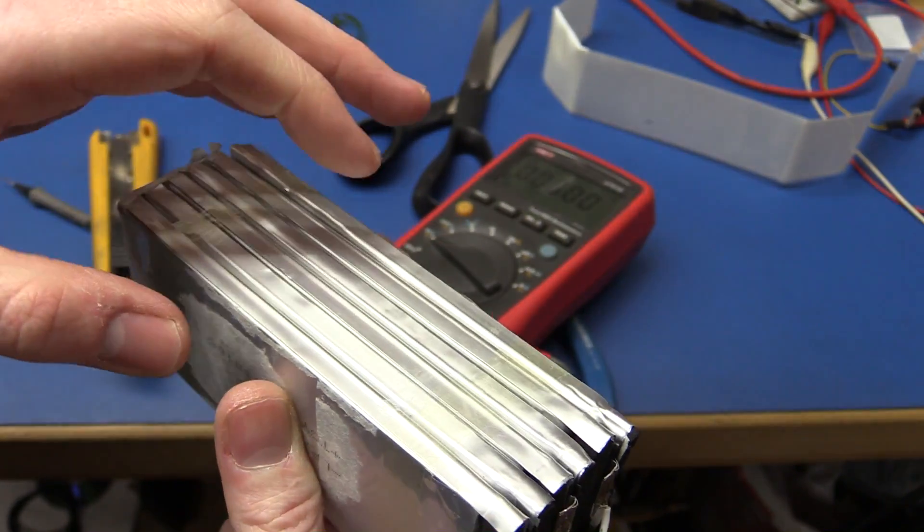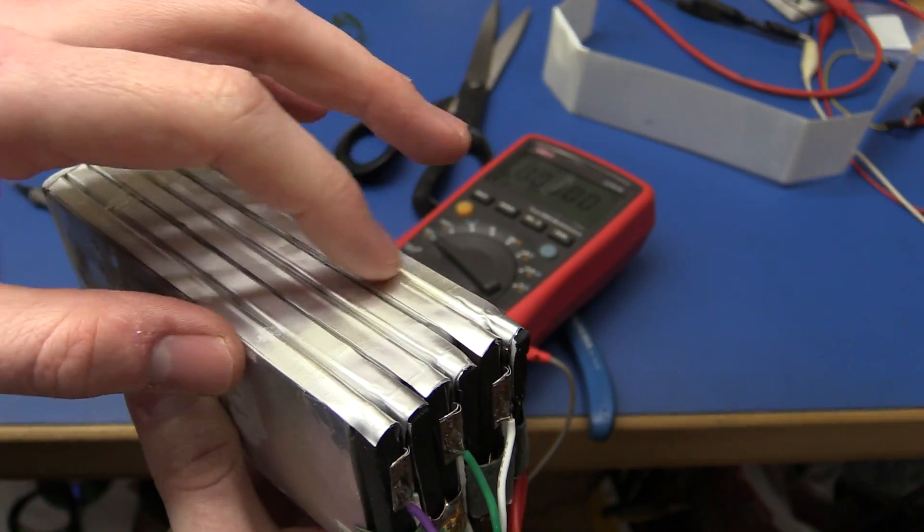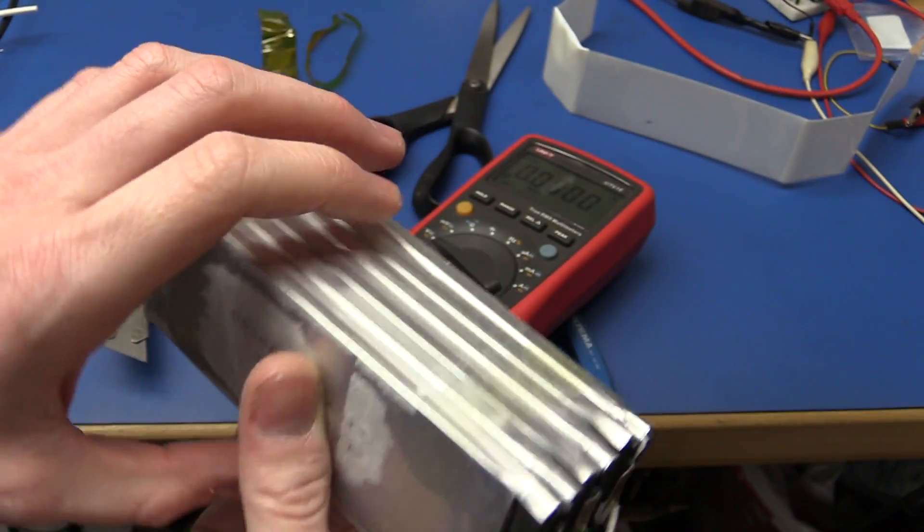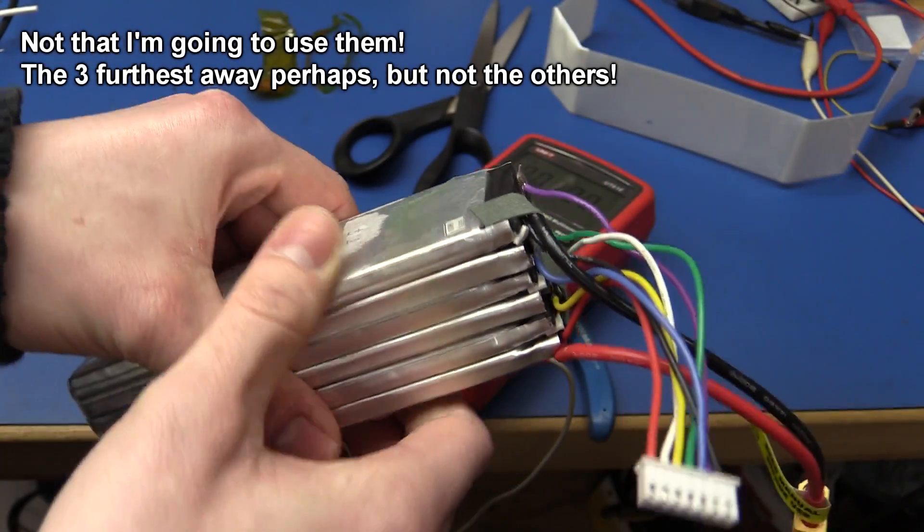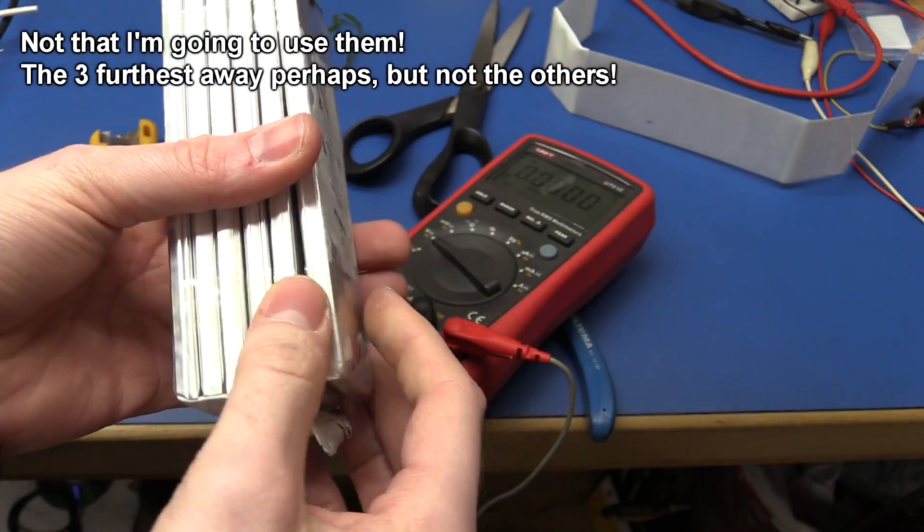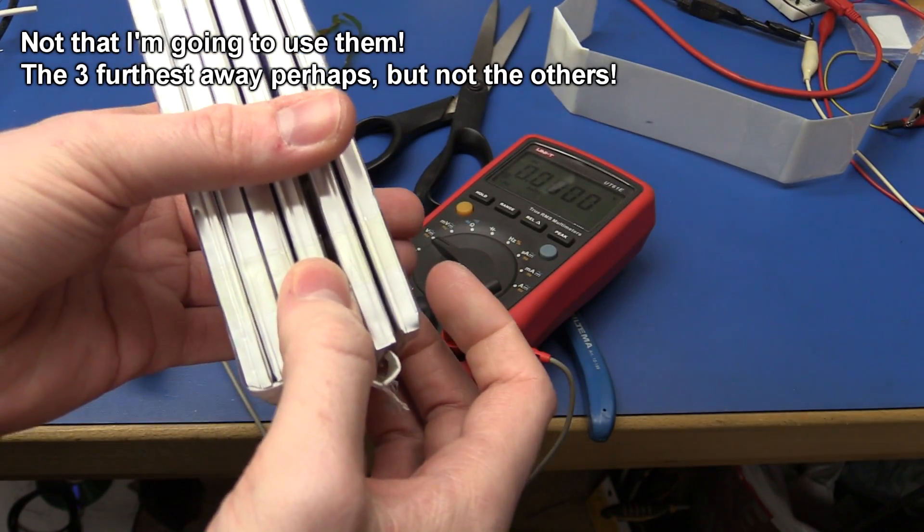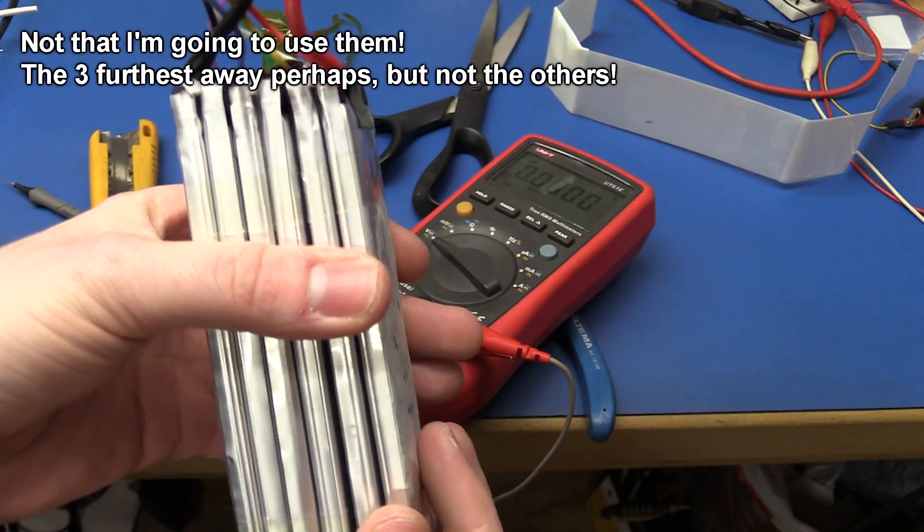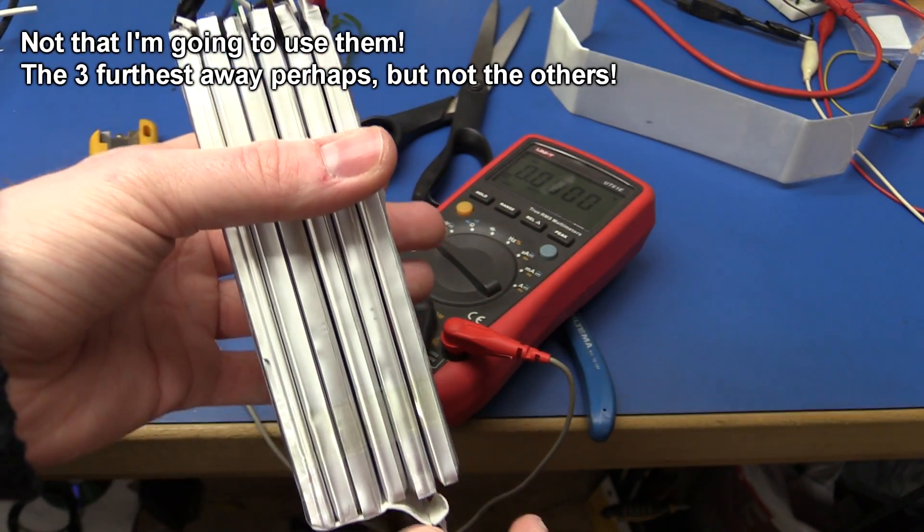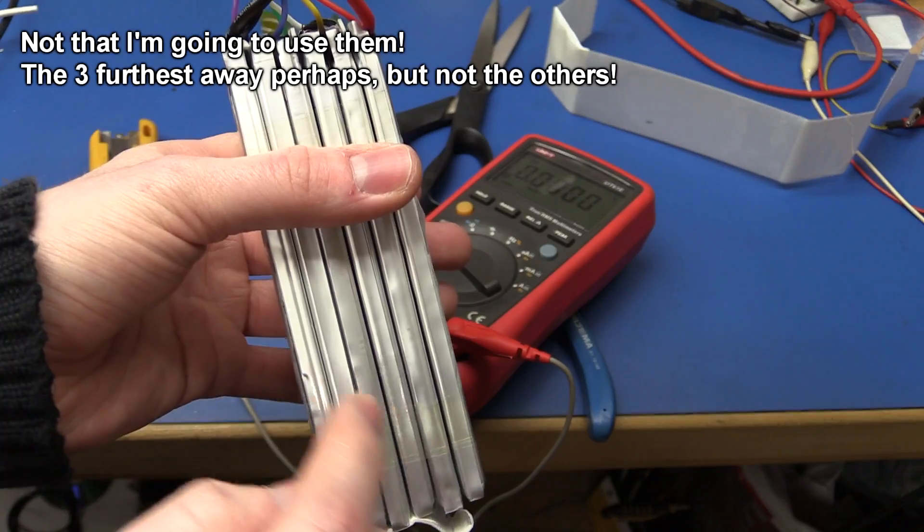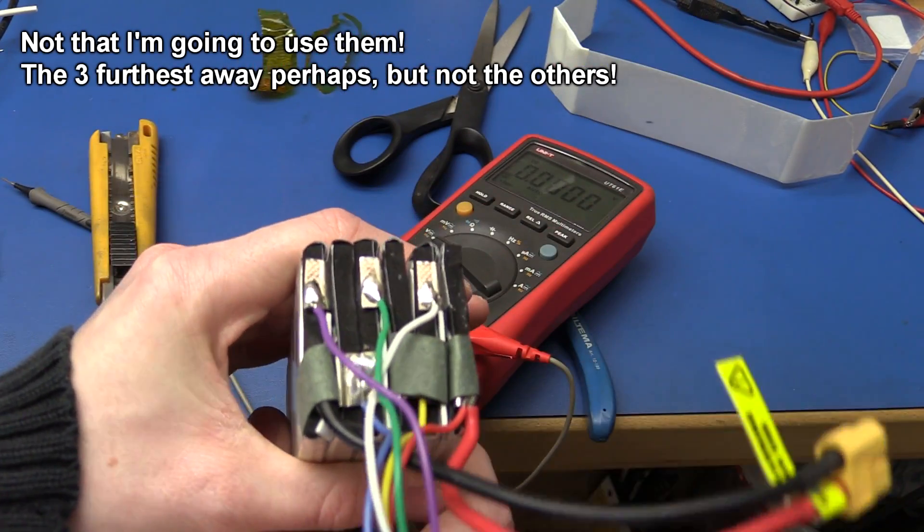If I get the time I might go and take the cells apart and do an individual test on each of them and see if this one and the third one have still got some capacity. This one is completely dead so that won't make any sense, and I'm sure at least the last three here, they should be fine.